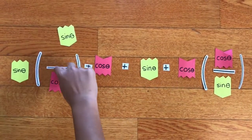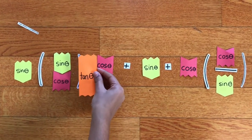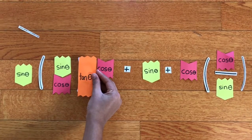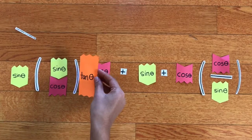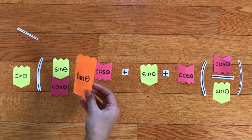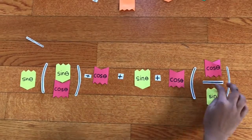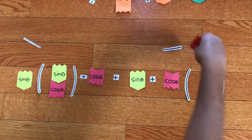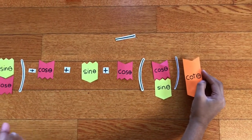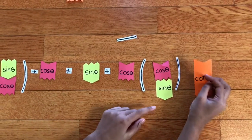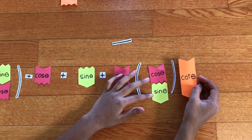Notice how sine theta over cosine theta is the same shape as tangent theta. The color of sine theta is yellow and cosine theta is red, and red and yellow mixed together equals orange, which is the color of tangent theta. And cosine theta over sine theta matches the shape of cotangent theta — the same concept applies, and red and yellow again equals orange, the color of cotangent theta.